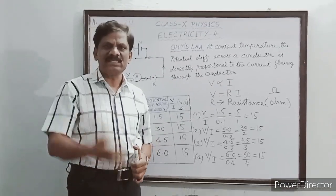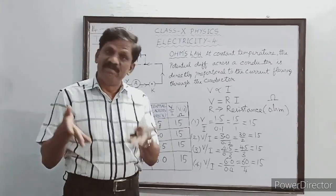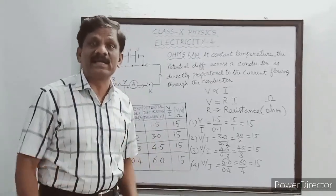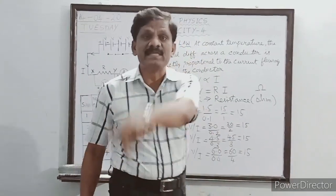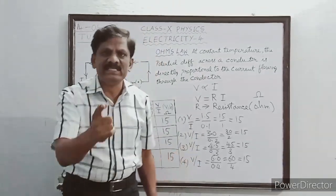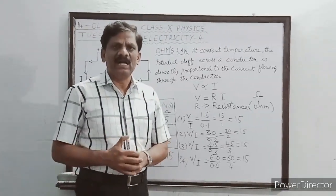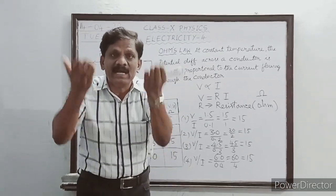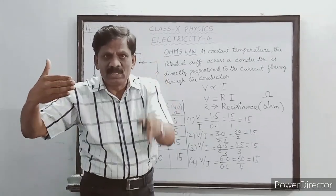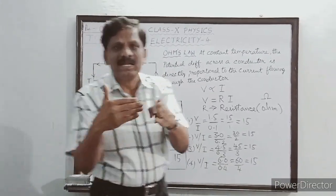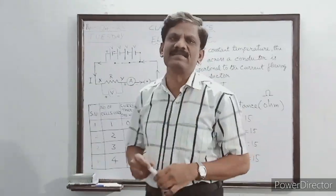Though electrons are called free electrons, they are not actually freely moving inside the conductor. When they try to move from lower potential to higher potential, they encounter positively charged ions in the conductor. These ions are very heavy and are oscillating and vibrating. As a result, the free electrons undergo collisions with the ions, which obstructs the free flow of the electrons. That is why it is called electrical resistance.